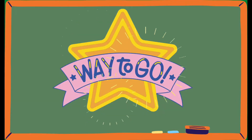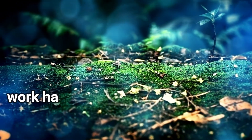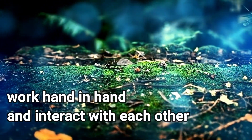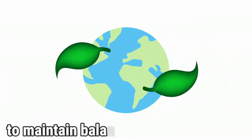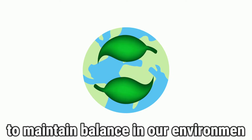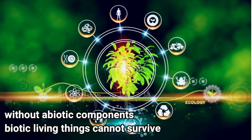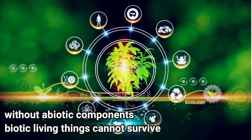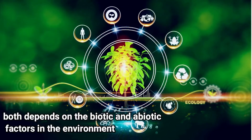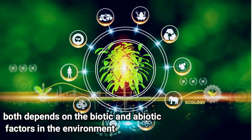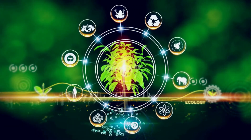Way to go, class! The biotic and abiotic components of an ecosystem work hand in hand and interact with each other to maintain balance in our environment. Without the abiotic components, biotic living things cannot survive. Organisms both depend on the biotic and abiotic factors in their environment.